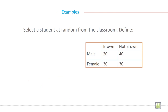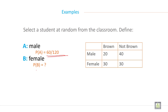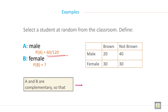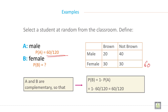Select a student at random from the classroom. Define male probability of A as 60 by 120, and female probability of B is equal to 60 by 120. A and B are complementary, so probability of B equals 1 minus probability of A: 1 minus 60 divided by 120, which gives 60 by 120.